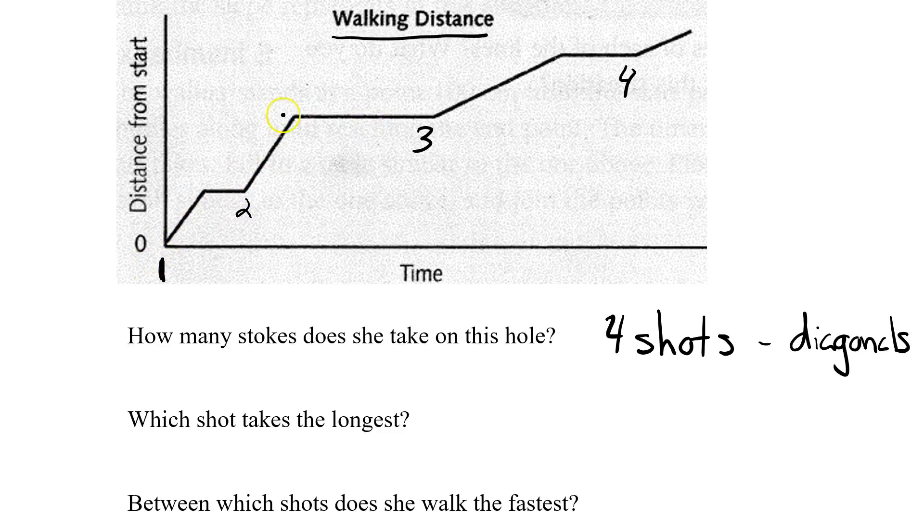Which shot is it? She shoots, she shoots, and she shoots. So she's setting up her third shot. So it's her third shot that takes the longest, and you're looking at the longest straight line.